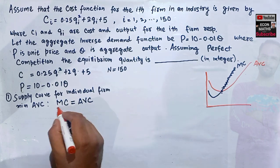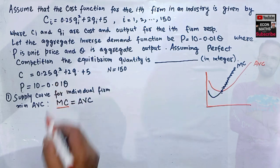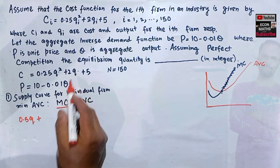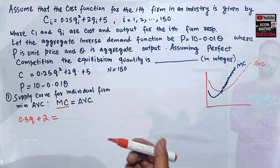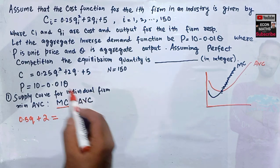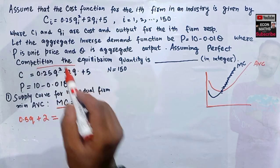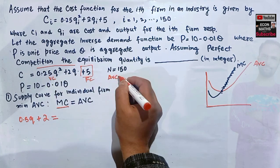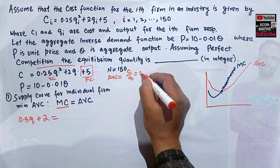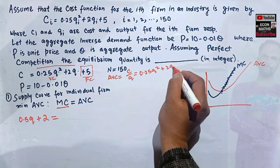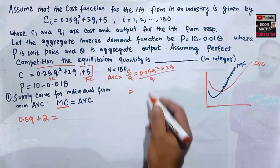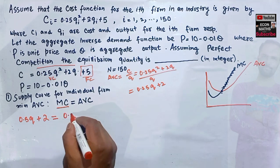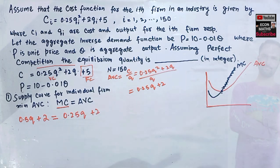Marginal cost is the derivative of the total cost function with respect to q: MC = 0.5q + 2. The variable cost portion is 0.25q² + 2q, and the fixed cost is 5. Average variable cost is the variable cost divided by q: AVC = 0.25q + 2.